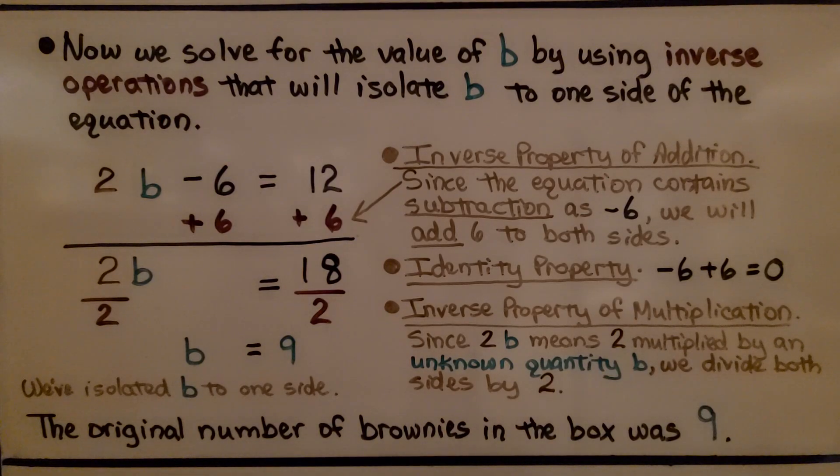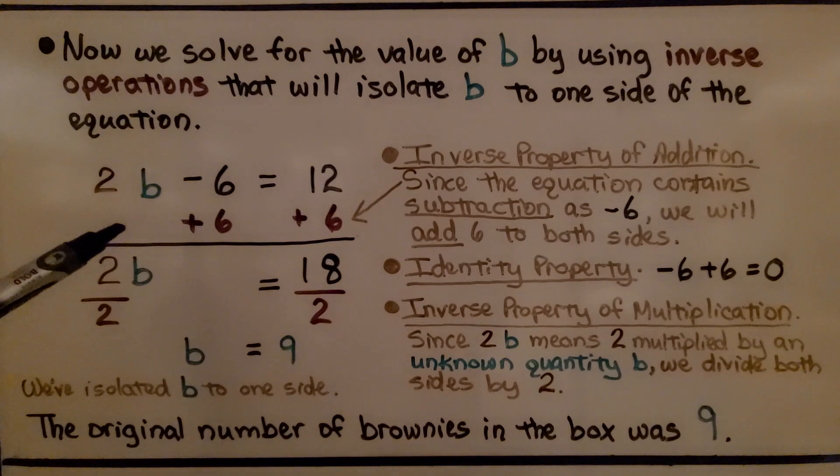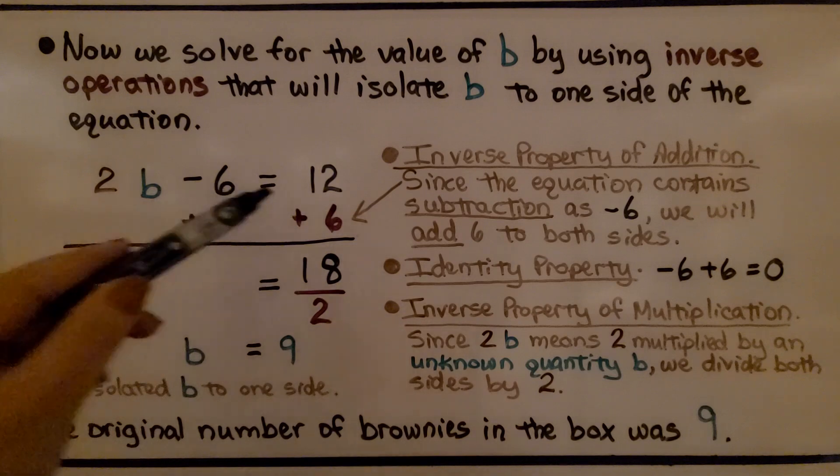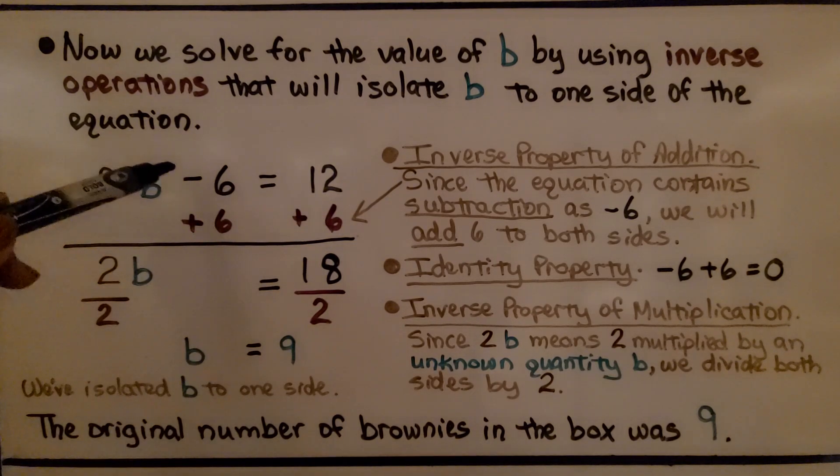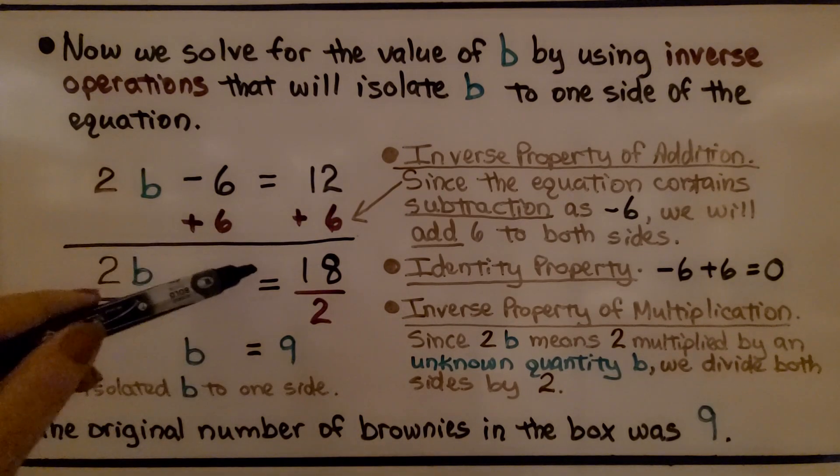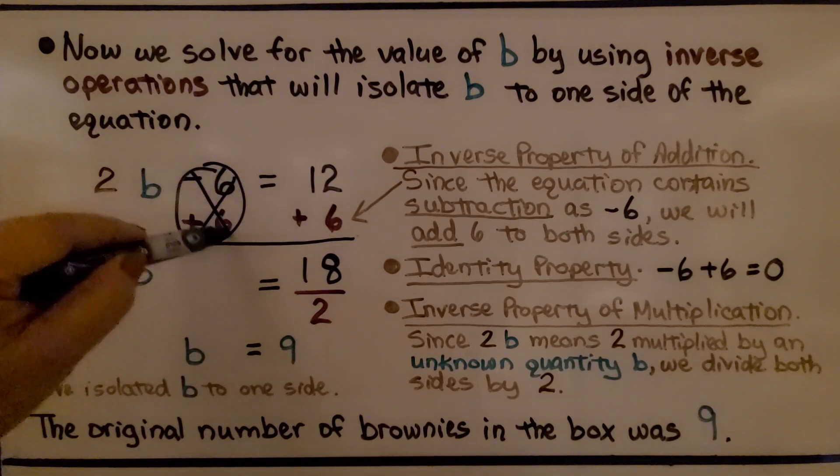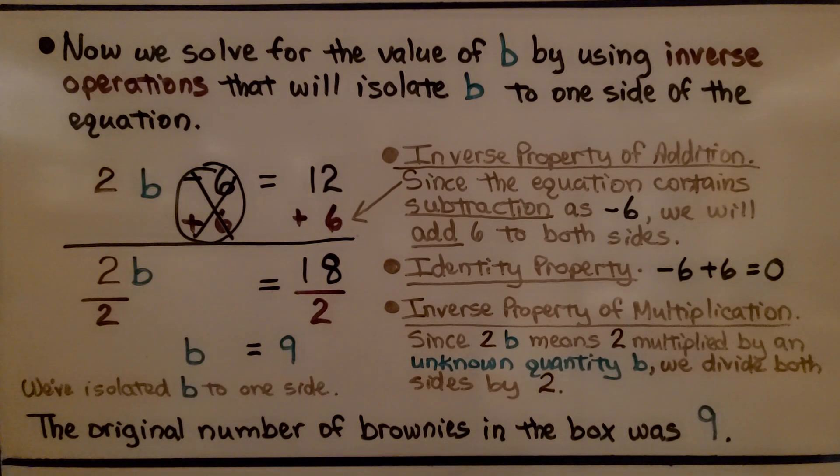Now we solve for the value of b by using inverse operations that will isolate b to one side of the equation. We have 2b minus 6 equals 12. We can use the inverse property of addition by doing plus 6 on both sides. Since the equation contains subtraction, minus 6, we add 6 to both sides. Now we have 2b equals 18. This minus 6 plus 6 created zero pairs and eliminated it. We just have 2b equals 18. That's the identity property.